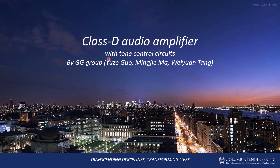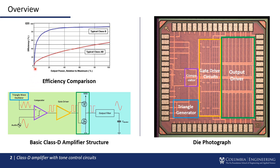Thanks to Yu Ze and Wei Yuan's presentation. Now it's our turn to talk about the method and topology behind the Class-D audio amplifier with tone control circuits. First, I want to give a general overview of why we use Class-D audio amplifiers in the industry. Most EE students can build a Class A or Class AB amplifier in their bachelor degrees. The efficiency of Class AB is marked in red, while the blue line represents Class D — and Class D is way more efficient.